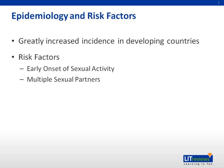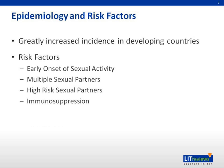Early onset of sexual activity, multiple sexual partners, and high-risk sexual activity all lead to increased exposure to HPV. Immunosuppression can also take many forms. Rheumatic diseases which require chronic steroid use can suppress the immune system, allowing HPV to take hold. Additionally, transplant patients are at higher risk of developing cervical cancer because of their immunosuppression. Finally, HIV patients are at a dramatically increased risk. Specifically, patients with low CD4 counts and high viral loads are not able to clear the HPV virus and are more likely to undergo malignant transformation.